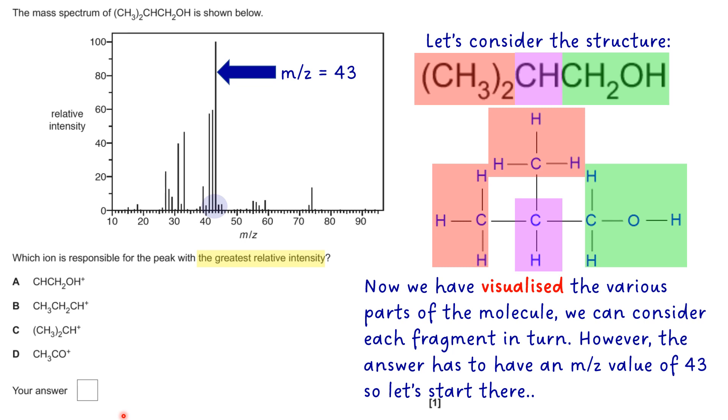So our starting point has to be m/z equals 43. If we take each fragment in turn and work out what its m/z value is, I personally find the easiest way to do that is to just write it out using its molecular formula as opposed to its structural formula.